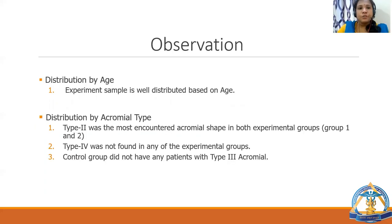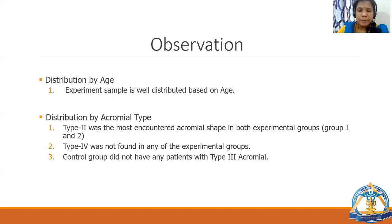In the observations, the experimental sample was well distributed based on age. Regarding distribution by acromial type, type 2 was the most encountered acromial shape in both Group 1 and Group 2, that is, in supraspinatus pathology and subacromial impingement pathology. Type 4 was not found in any experimental group, and the control group had no patients with type 3 acromial.